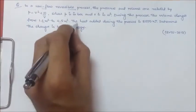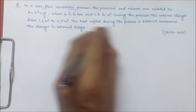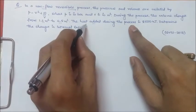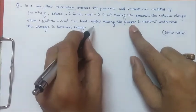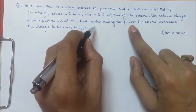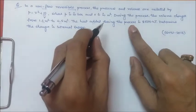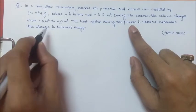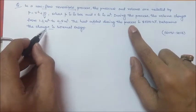Now, heat is added to the process. When heat is added, we can apply the first law of thermodynamics. That is, δQ equals dU plus δW, where δW is the closed system work. From there, we can calculate the change in internal energy.